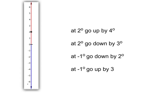OK, let's look at how these should have worked out. If you're at 2 degrees centigrade and you go up by 4, you'll end up at 6. If you're at 2 and you go down by 1, 2, 3, you'll end up at negative 1. And if you're at negative 1 degree and you go down by 2, you'll end up at negative 3. And if you're at negative 1 and you go up 1, 2, 3 degrees, you'll end up at 2 degrees centigrade.